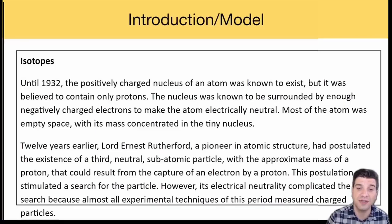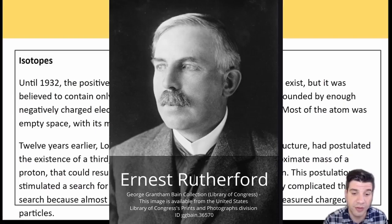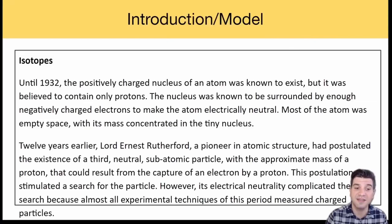Until 1932, the positively charged nucleus of an atom was known to exist but it was believed to contain only protons. The nucleus was known to be surrounded by enough negatively charged electrons to make the atom electrically neutral. Most of the atom was empty space with its mass concentrated in the tiny nucleus. Twelve years earlier, Lord Ernest Rutherford, a pioneer in atomic structure, had postulated the existence of a third, neutral, subatomic particle with the approximate mass of a proton that could result from the capture of an electron by a proton.